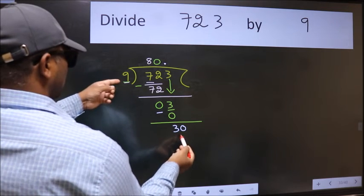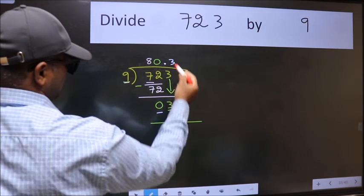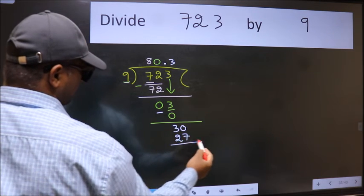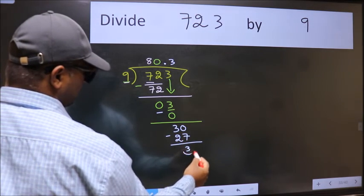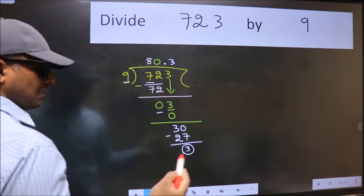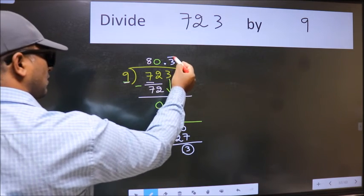A number close to 30 in 9 table is 9 threes, 27. Now we subtract. We got 3 again. That means we get bar on this number.